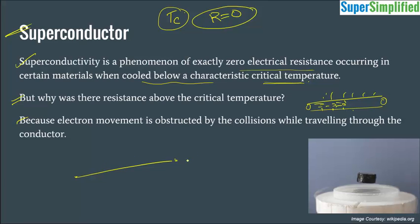The question is: above critical temperature, the same material was exhibiting normal properties. But suddenly below critical temperature, it has started exhibiting some special kind of characteristics — superconductivity, zero resistance — all those things below critical temperature. So what changes have happened?